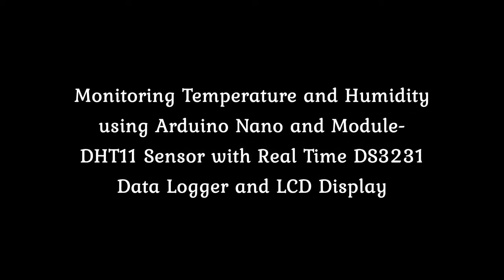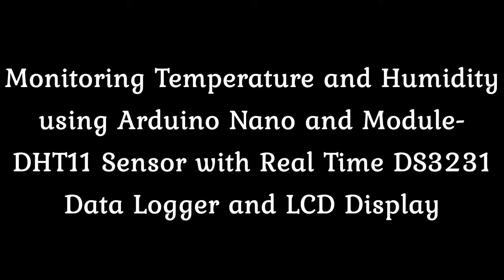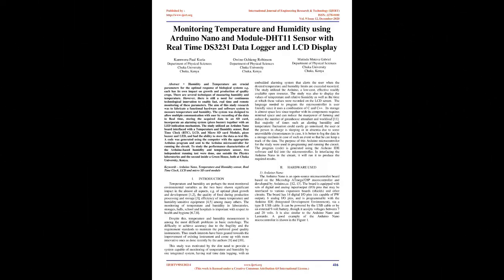Monitoring temperature and humidity using Arduino Nano and DHT11 sensor with real-time DS3231 data logger and LCD display. Abstract: humidity and temperature are crucial parameters for the optimal response of biological systems, each having its own impact on growth and production of quality crops. There are several techniques of measuring humidity and temperature; however, there is still a need for continuous technological innovation to enable fast, real-time and remote monitoring of these parameters. The aim of this study was to fabricate a functional hardware and software system to measure temperature and humidity.